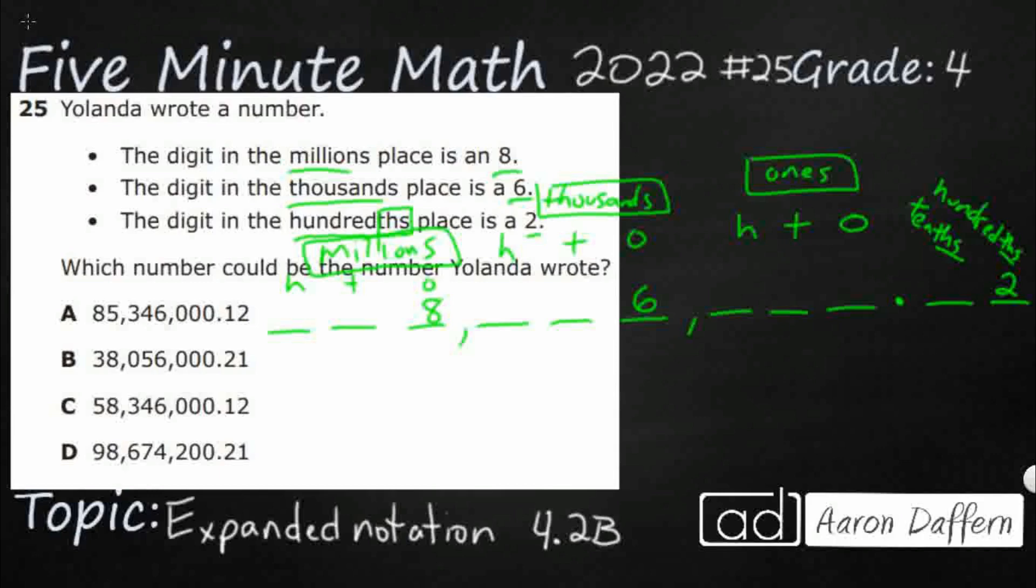So let's check each of our numbers. I'm going to write them underneath here, starting with my decimal—that kind of anchors me. I've got three zeros. This is A right here. I've got a 3, 4, 6. Looking good so far. Oh, look at that—that 8 is in the wrong spot. The 6 is good and the 2 is good, but they put the 8 in the ten millions. So that's not it.